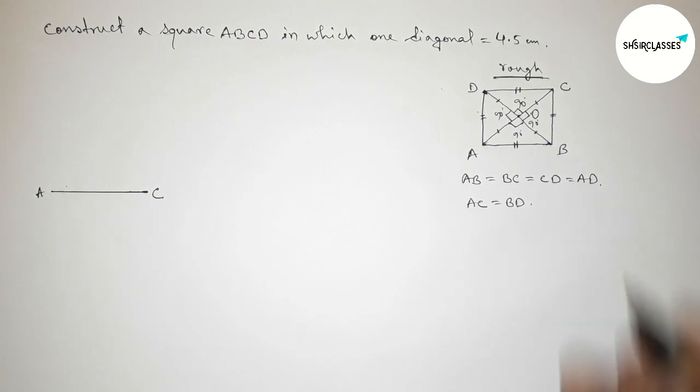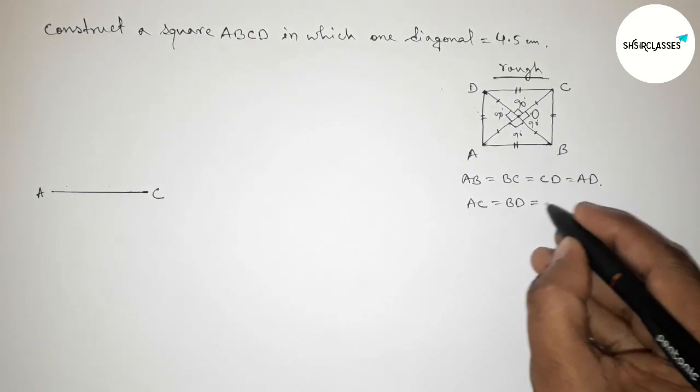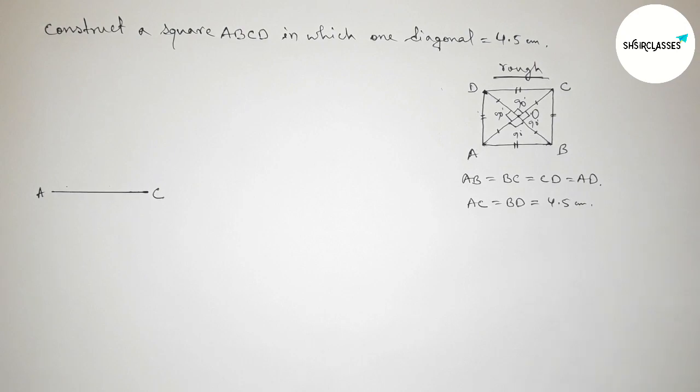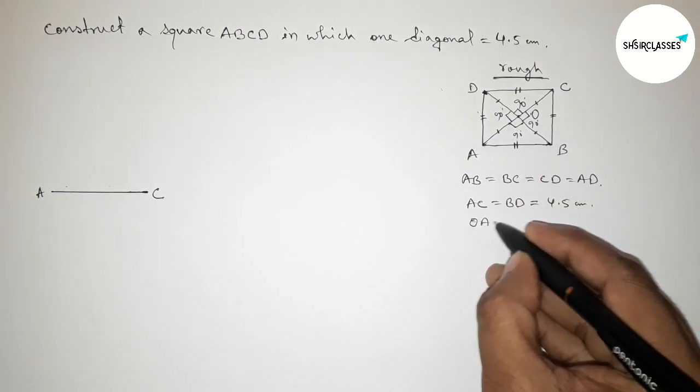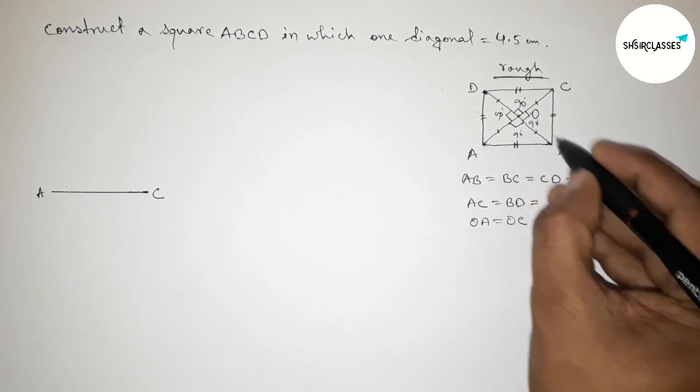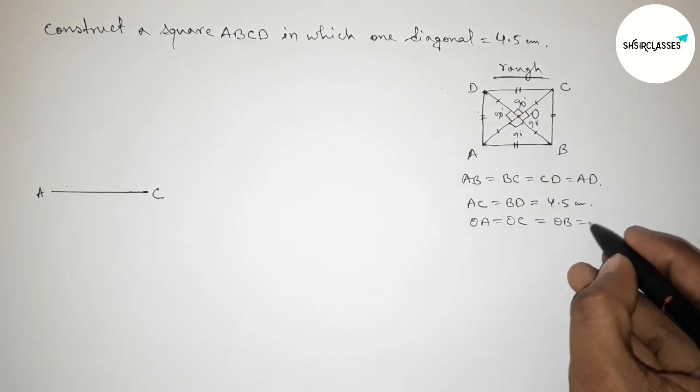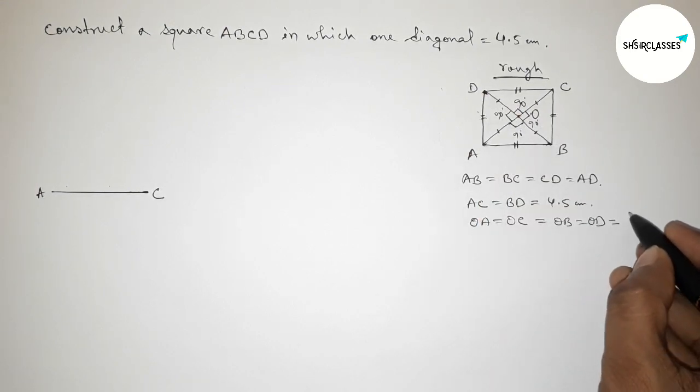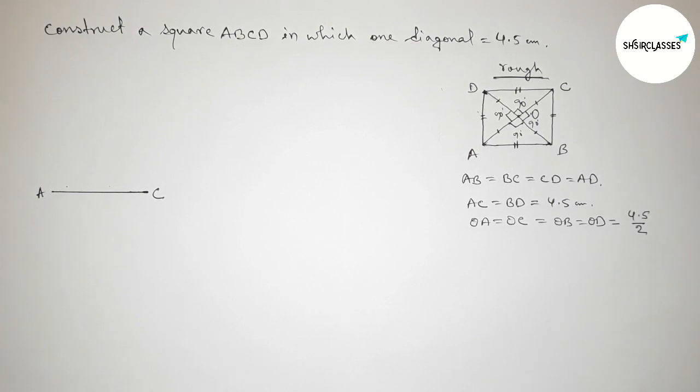Equals to 4.5 centimeter. And also we can say that the length OA equals to OC equals to OD equals to OB equals to 4.5 by 2 centimeter. Now I'm going to apply this concept.